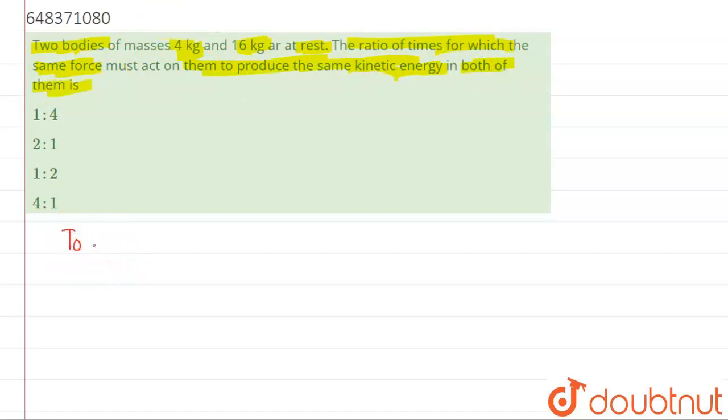So basically to produce same kinetic energy, to produce same kinetic energy in both bodies, what we need is that we need constant or same acceleration. Same acceleration.